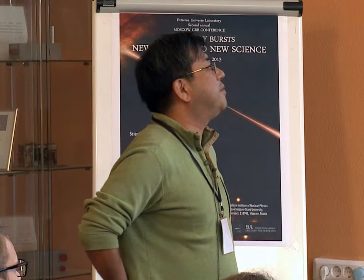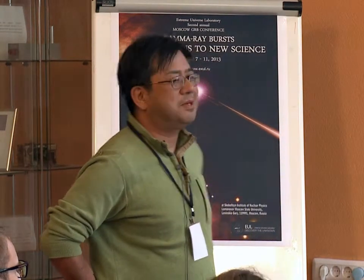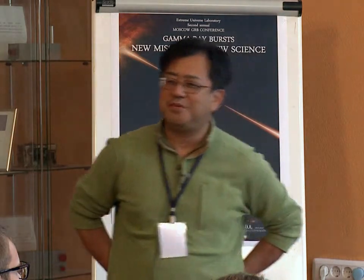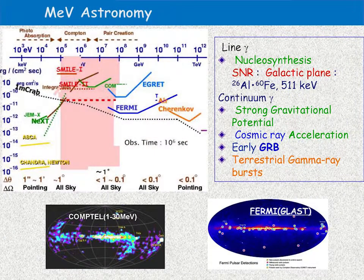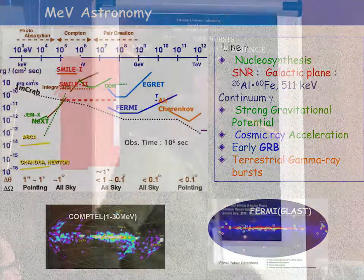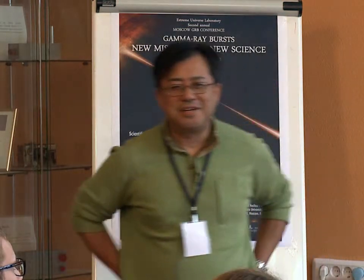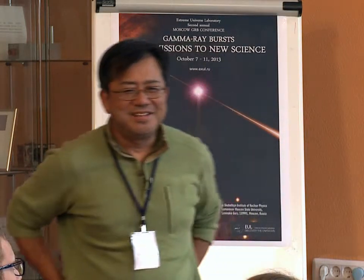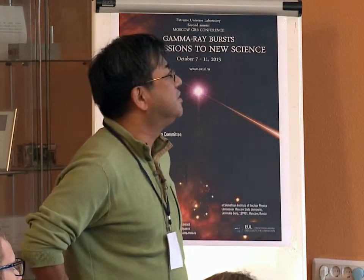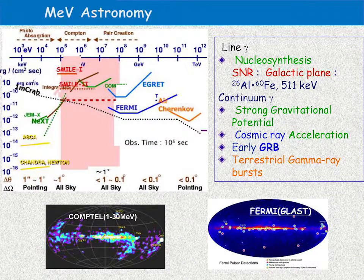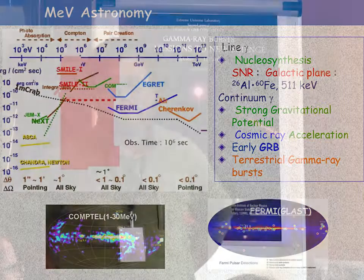Traditionally, line gamma-ray physics is very famous in this region, because this region was explored by nuclear physics. Even now, many MeV gamma-ray astronomers concentrate on line gamma-ray physics, and it is quite important for understanding nucleosynthesis. Also, continuous gamma-ray emission in this region is quite promising, and is important for understanding particle acceleration.